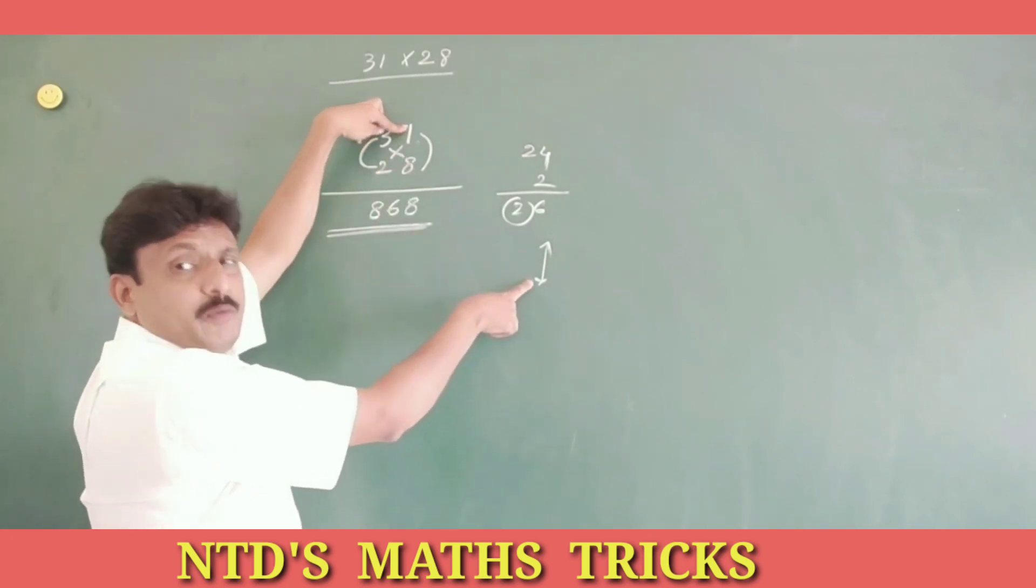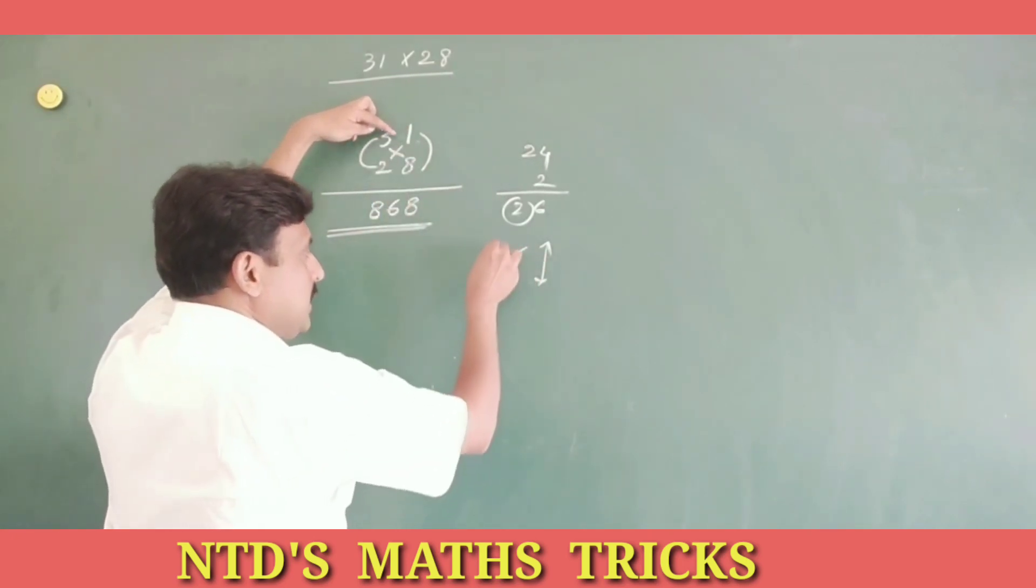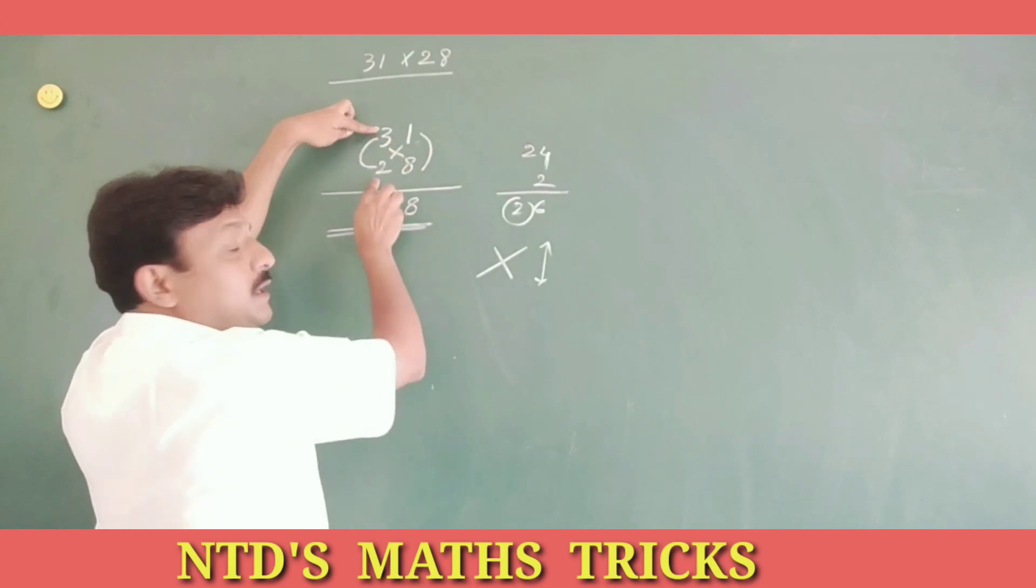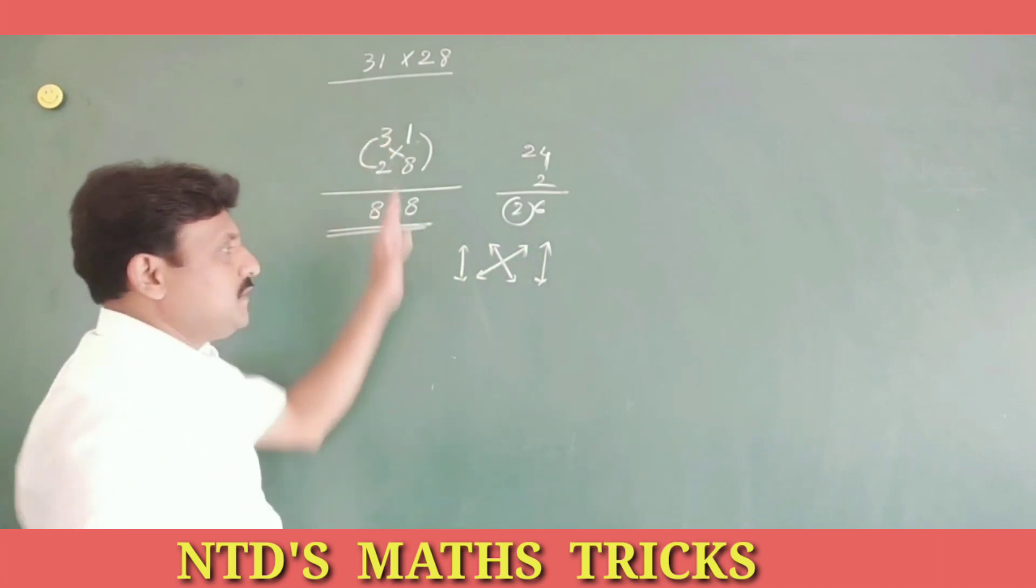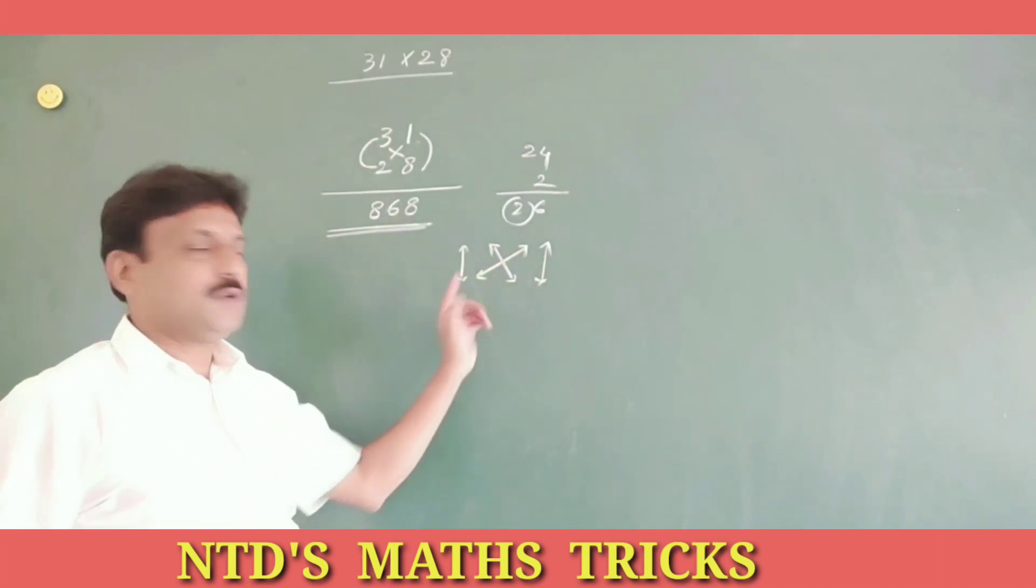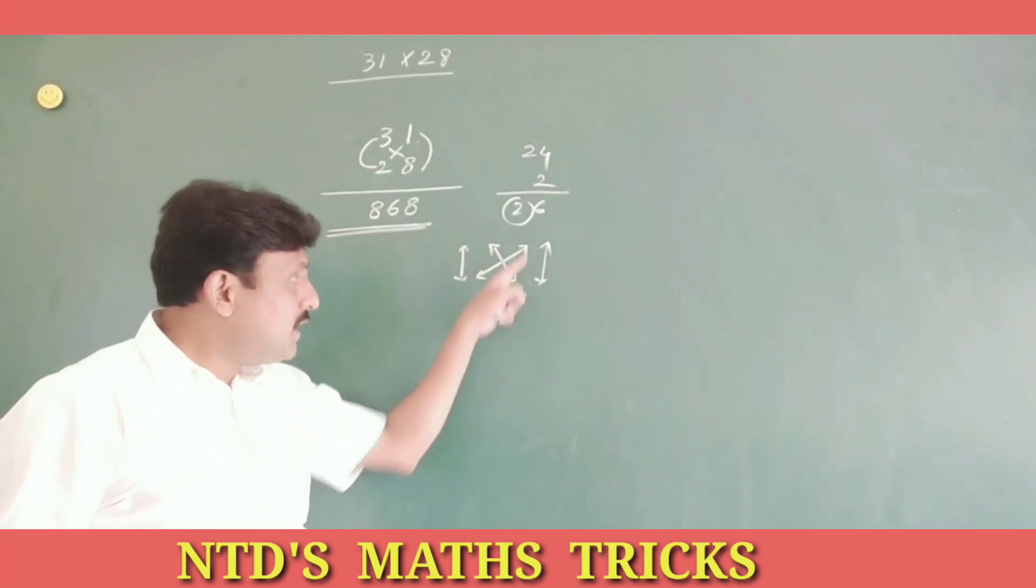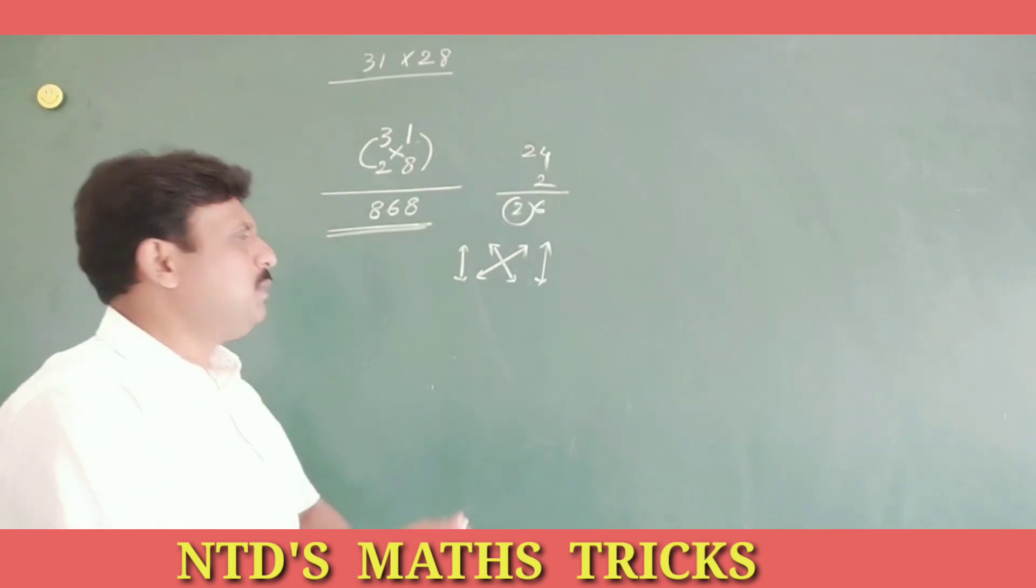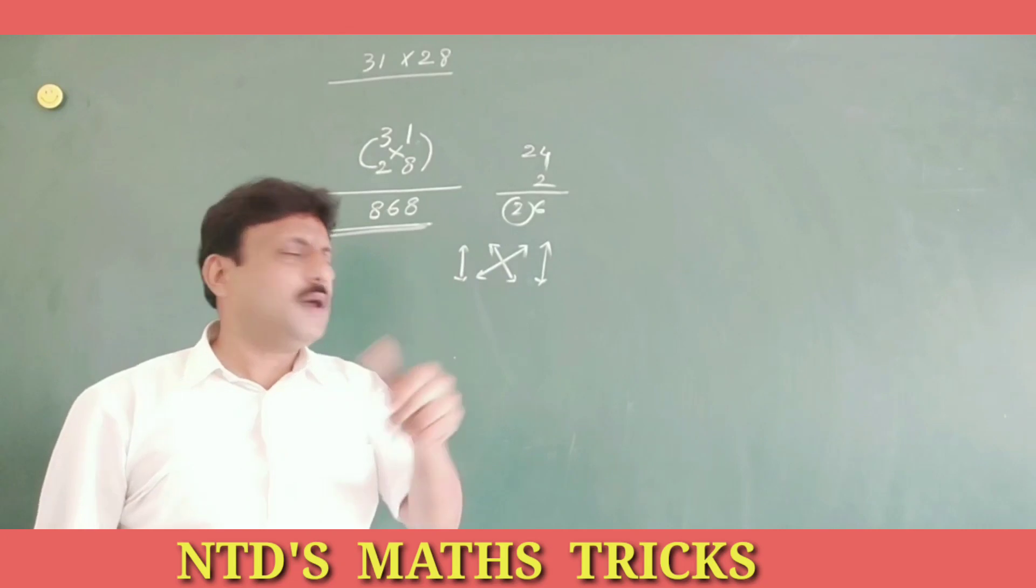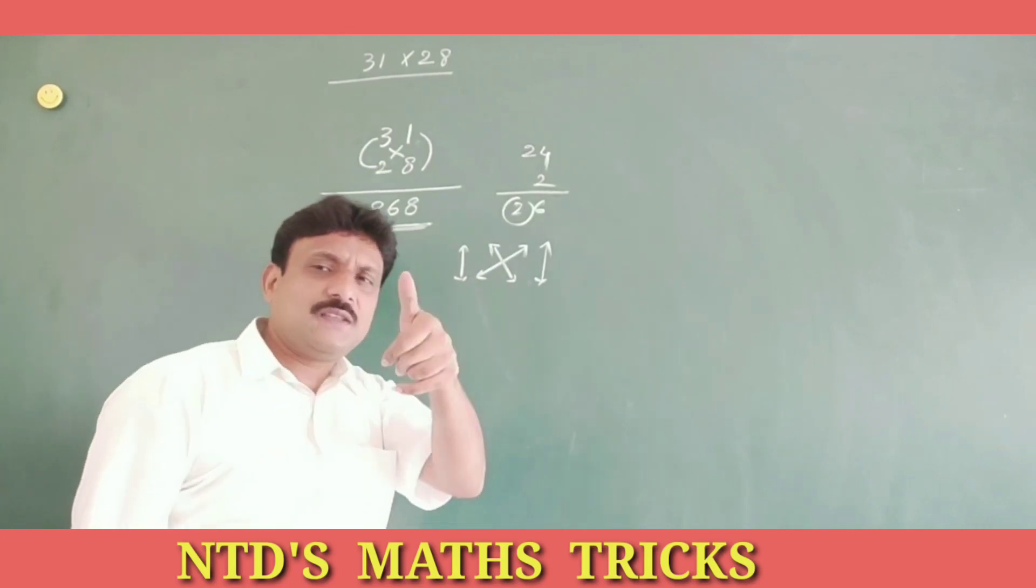Now first multiply unit place number, cross multiply, 10 multiply 10 plus number. This is the trick here. Unit place number, cross multiplication, 10 place number multiplication. You can multiply any two-digit number by using these tricks.